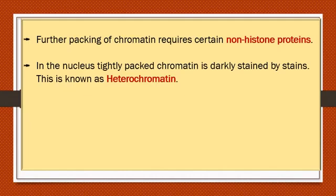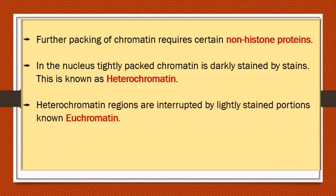Chromatin in the nucleus can be stained with a dye and observed under a microscope. The tightly packed chromatin is darkly stained and is known as heterochromatin. Heterochromatin regions are interrupted by lightly stained portions known as euchromatin.